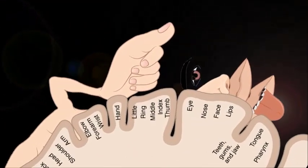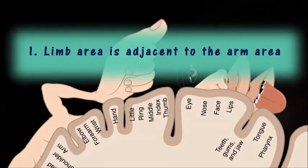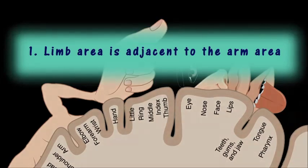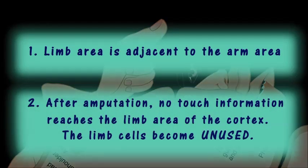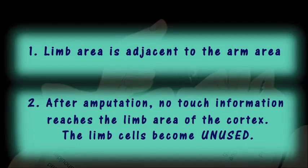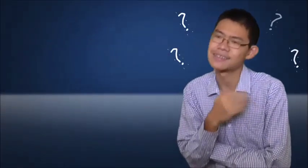Based on what we've just learned, the arm area sits right next to the face area in the cortex. And since the limb's been cut off, no touch information can reach the limb area of the cortex, leaving the limb cells unused. But how is this all related to phantom limb theory? Well,